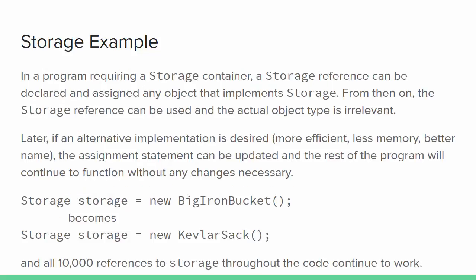Our first attempt at writing a class to fit the Storage abstraction might be the BigIronBucket class. It's a little clunky, but it's just our first try. In our program, we would create a variable of type Storage to which we would assign an instance of BigIronBucket. Throughout the rest of the program, we would always work with the Storage abstraction — we can forget that behind the scenes is a BigIronBucket. Later, we may find that we can make a KevlarSac class that also implements the Storage interface, but it has much less overhead and works better in our program. We can change the Storage assignment from a BigIronBucket object to a KevlarSac object, and everything else in the program will continue to work as before because it only ever required that the object we're using is some kind of Storage.